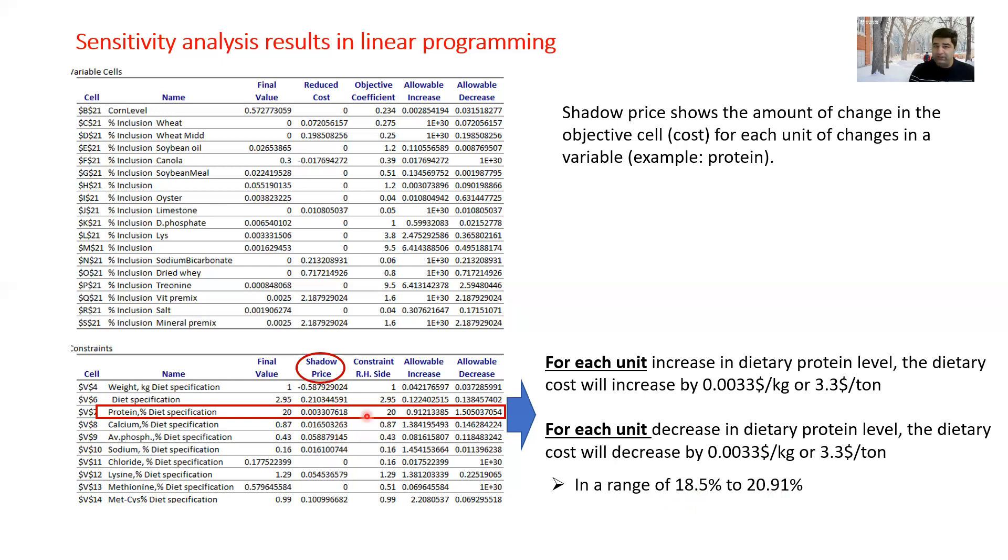It means that for each unit of increase or decrease in dietary protein, my dietary cost would increase or decrease by this amount respectively. But if I were to change the dietary protein beyond this range, then this shadow price is not true and I need to rerun the solver function.